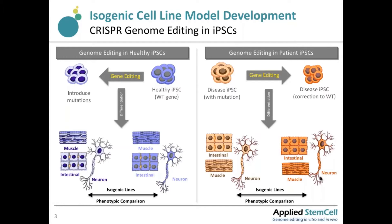On the right side, we go in the other direction: we start with disease-state iPS cells derived from patients with known mutations. These cells can then be genetically engineered to correct the disease mutation back to the wild-type gene. The disease iPS cells and the corrected wild-type cell lines can be differentiated into specific cell types and compared across different profiles.